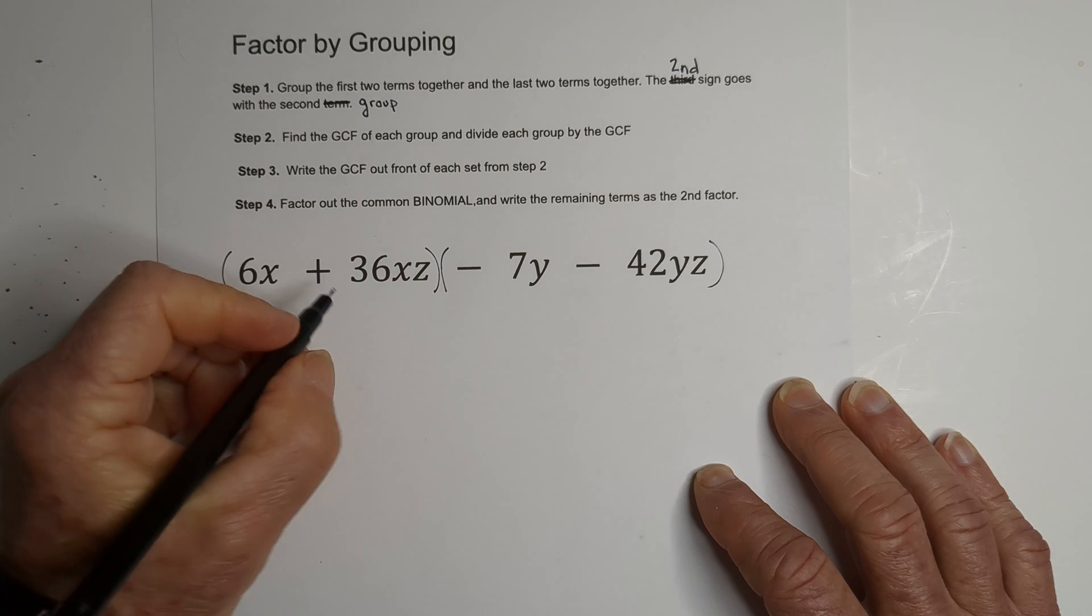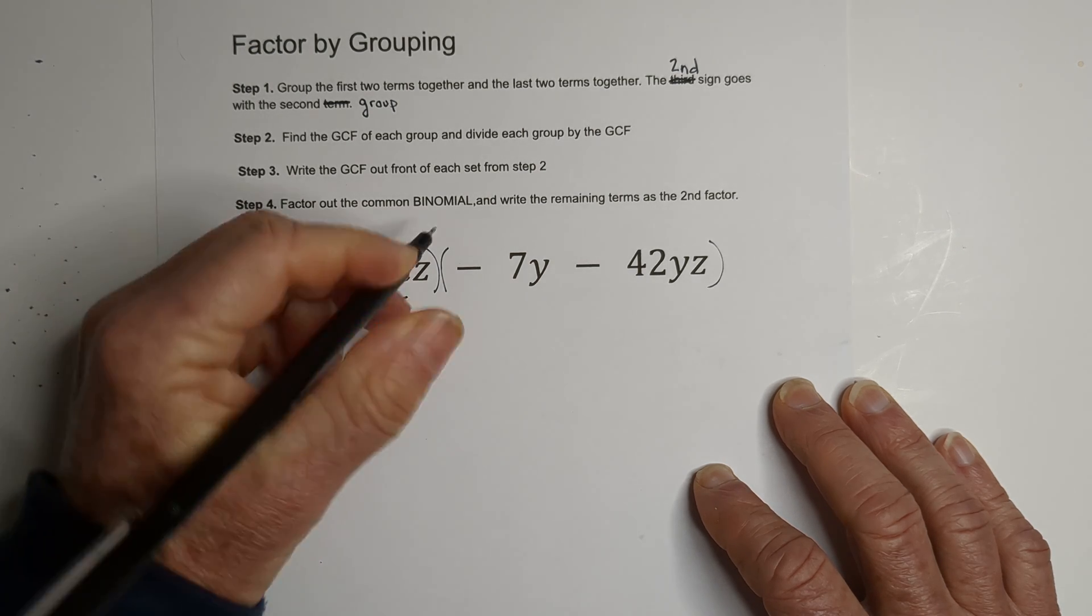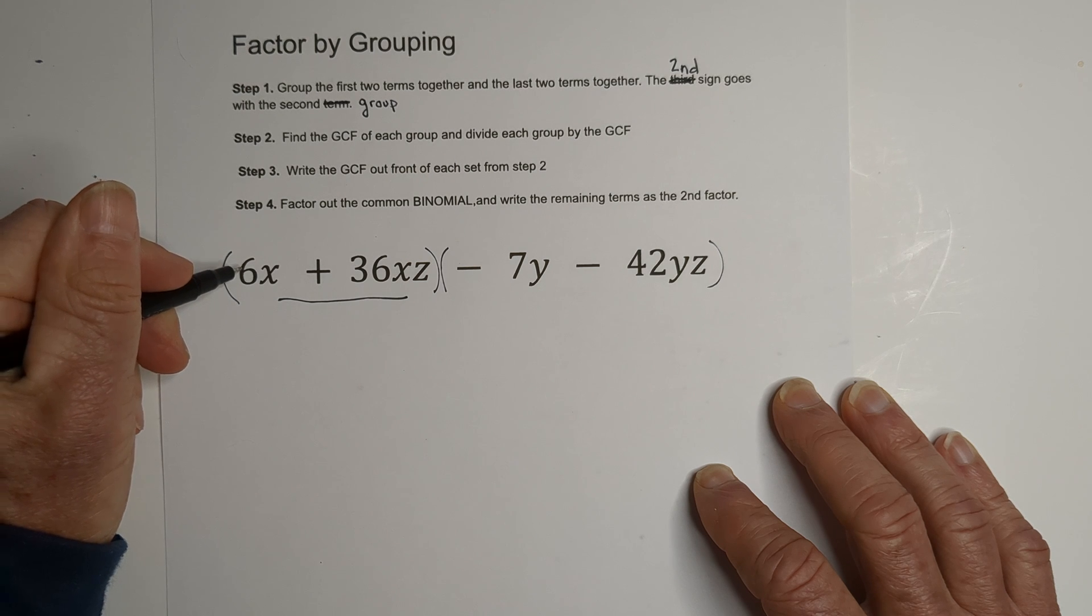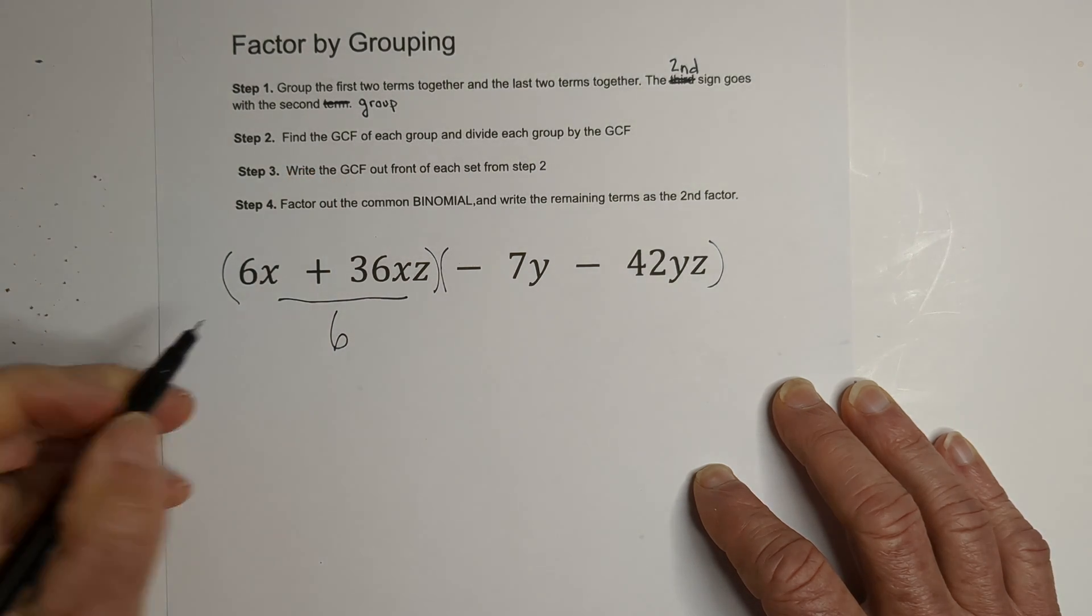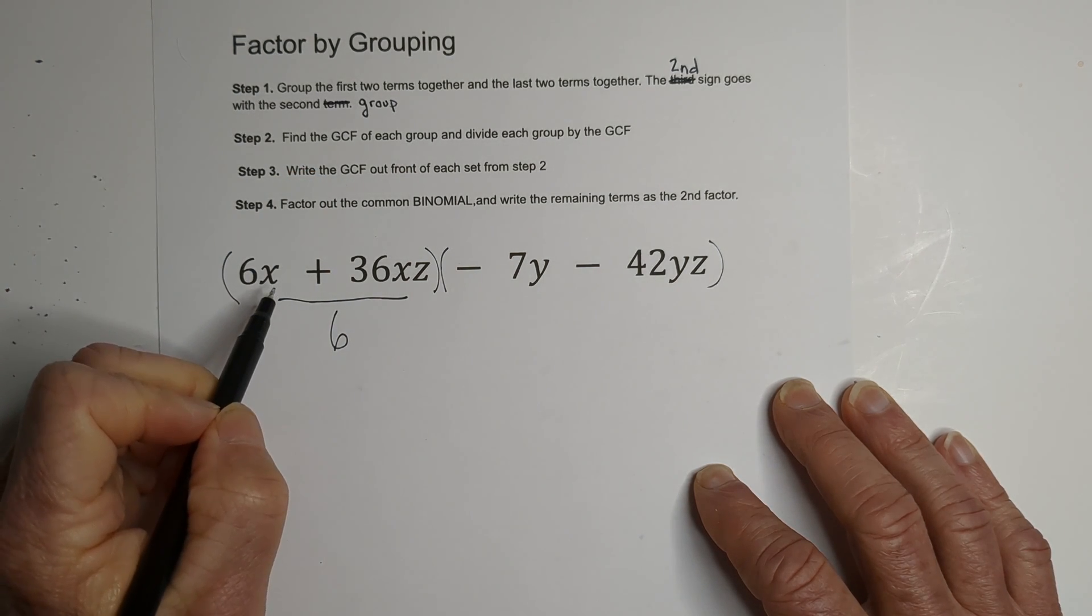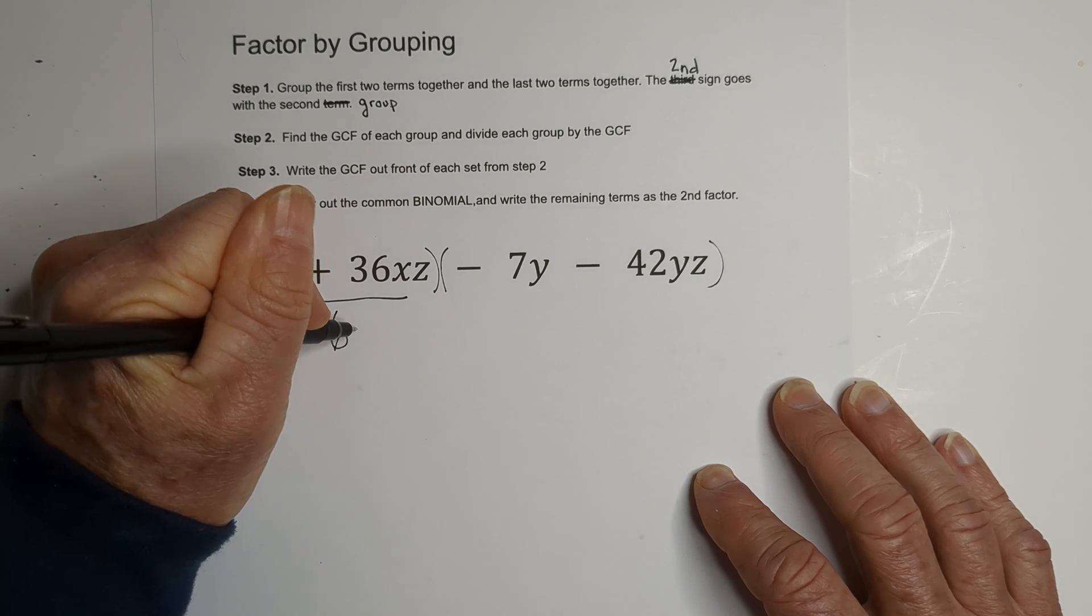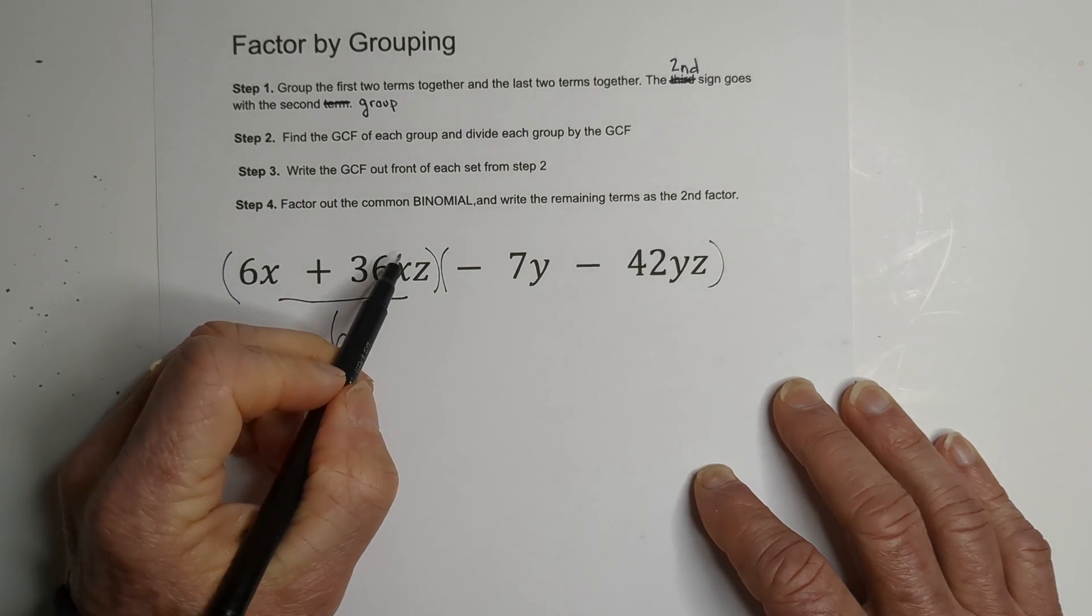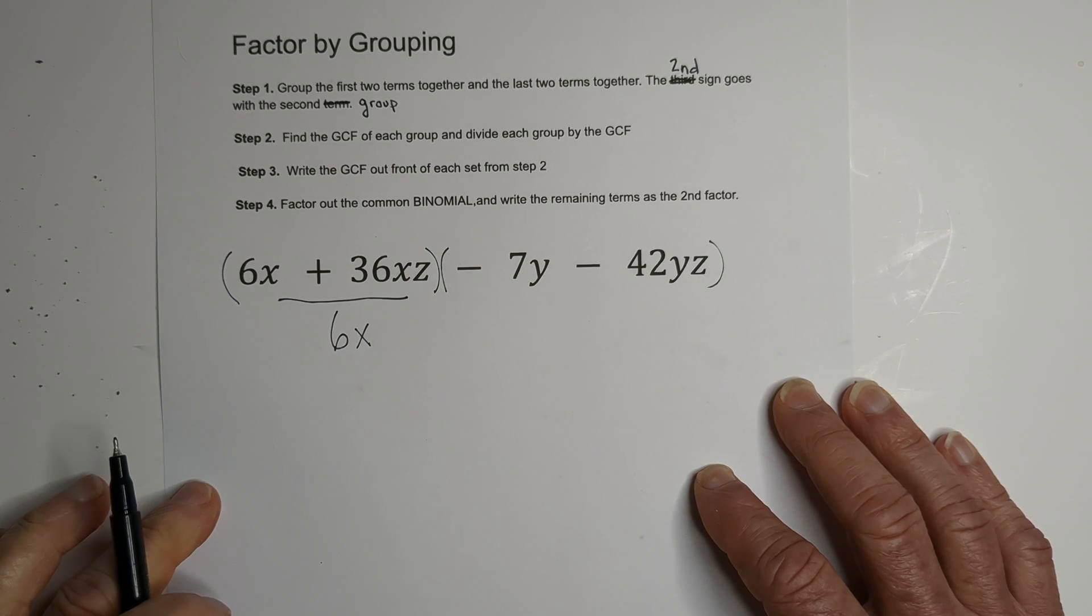Now let's find the GCF of each of these. We have two constants, the GCF of 6 and 36 is 6. Let's see what variables we have in common. We have an x, no z, and it's to the first power. So there's our GCF here.